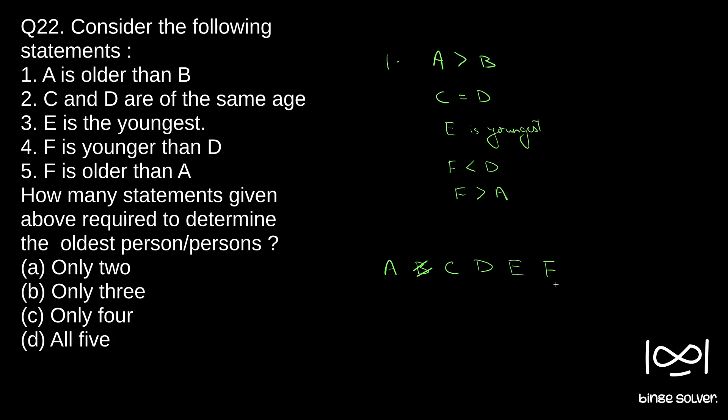Now we have these people remaining. We can use this statement to find that A is not the oldest person here. So we can strike off A. These are the people left.